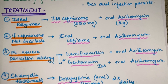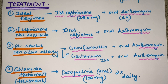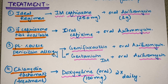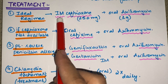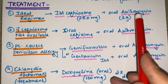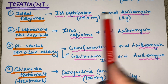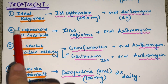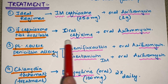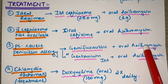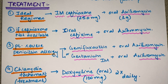Moving on to treatment — how we will treat a patient of gonorrhea. The ideal regimen is a third-generation cephalosporin plus azithromycin. We prefer long-acting ceftriaxone 250 mg IM injection plus oral azithromycin 1 gram, given simultaneously on the same day. If ceftriaxone is not available, we go for oral cefixime plus oral azithromycin.